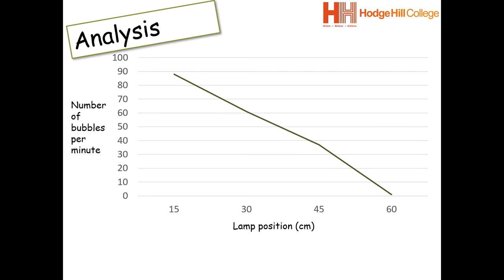So in terms of if we were to put those results into a graph, we can see that as the lamp position increases, the number of bubbles per minute actually decreases. The reason for this would be that the light intensity is actually decreasing. So if the lamp is closer, that means we've got a higher light intensity. If the lamp is further away, we've got a lower light intensity and we can see that the number of bubbles per minute is linked to this.